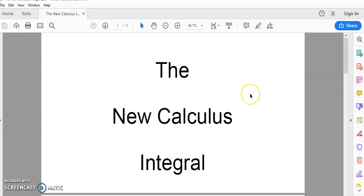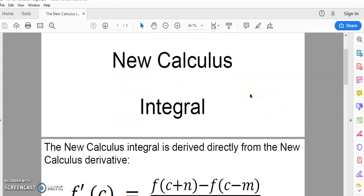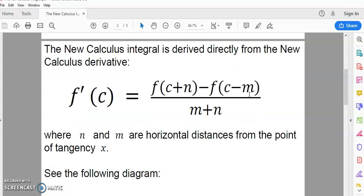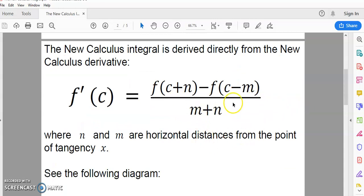Now, the New Calculus integral is derived directly from the New Calculus derivative, and you see it stated there. f prime of c is equal to this finite difference, where c is the point of tangency.